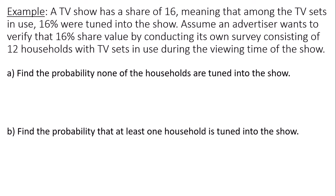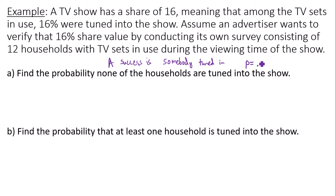Part A: find the probability that none of the households are tuned into the show. We're setting this up like a binomial experiment. A success is when somebody is tuned in. The probability someone is tuned into the show is 0.16. We want to find the probability that exactly zero of the households are tuned into the show.